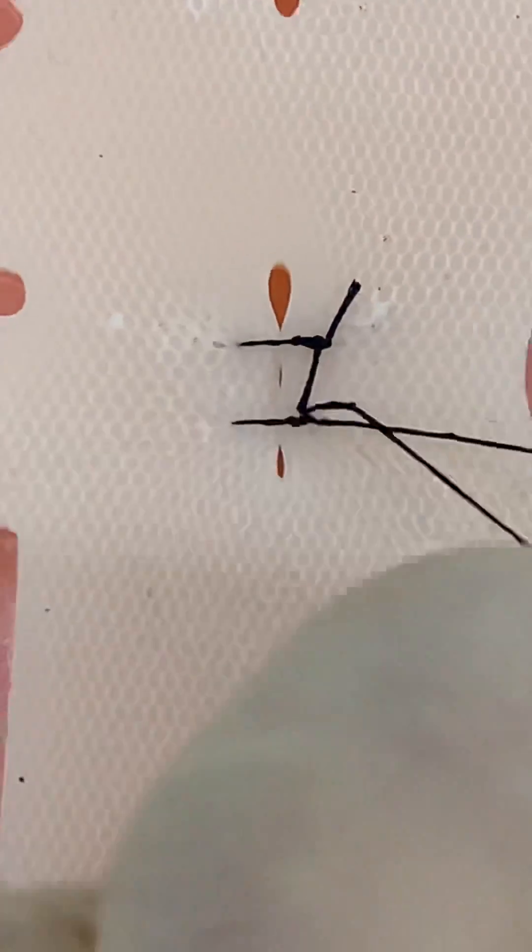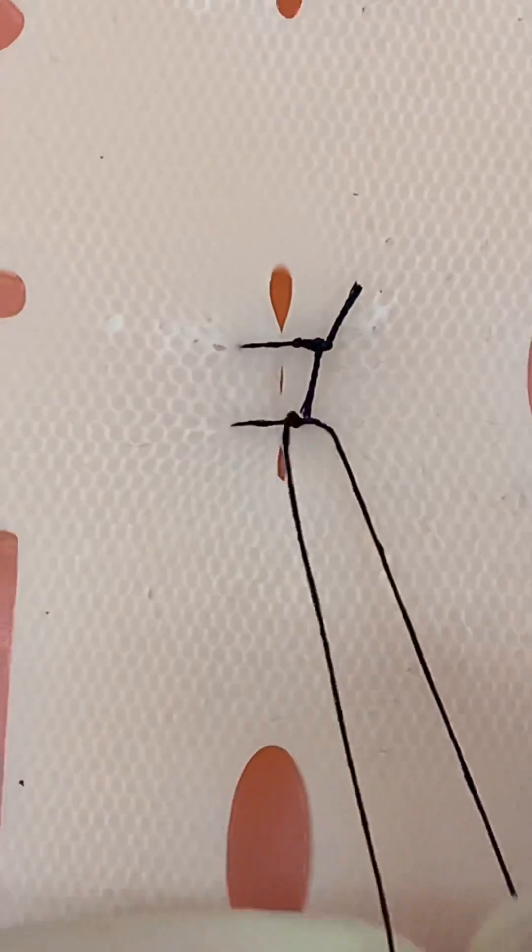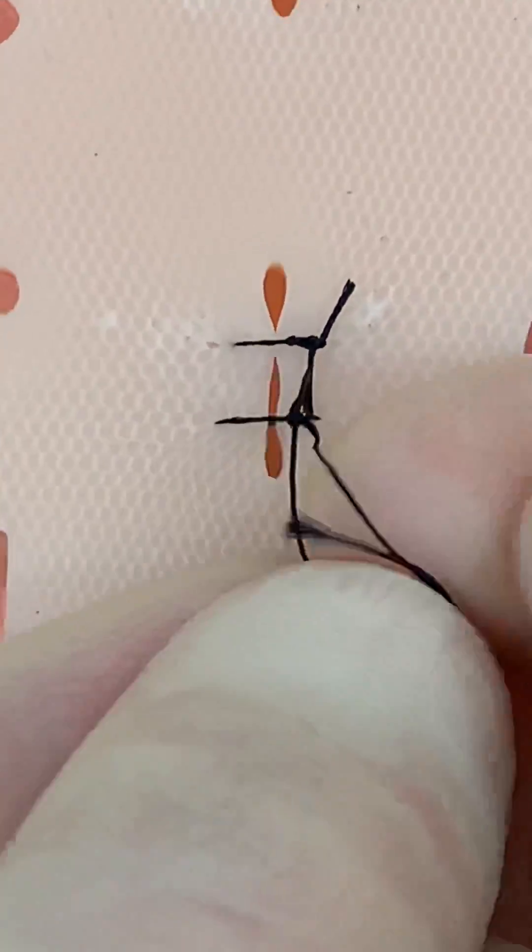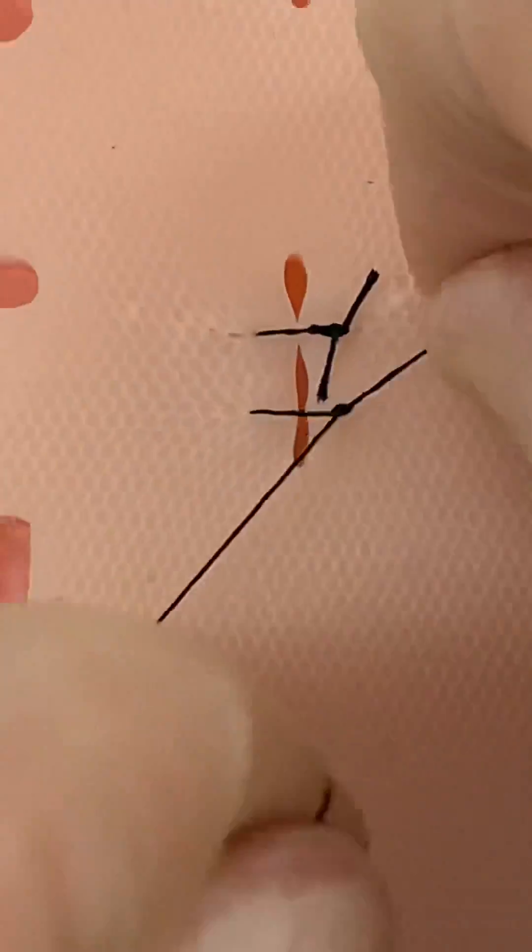For example, if I pull the right strand over and under the first time, I'll need to pull it under then over the second time because, if I forget, I'll need to take everything out and start again.